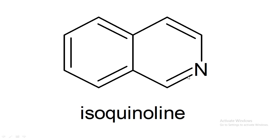One more important thing about this structure is to understand this fusion. In the Greek nomenclature, if I assign A to this arm of the pyridine ring, then it will be A, then B, and then C. So it is the C arm which is fused with the benzene ring with respect to the heteroatom. But as the nomenclature of isoquinoline starts from this particular carbon, this is A and this is B. So isoquinoline can be defined as a fused heterocyclic compound which is a fusion of two six-membered rings through the B arm of the heteroatom-containing ring.